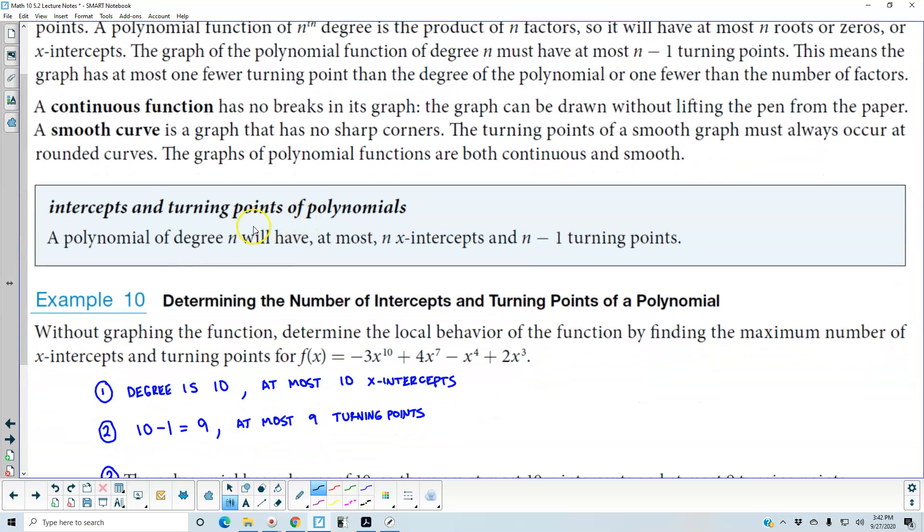Intercepts and turning points of polynomials. A polynomial of degree n will have at most n x-intercepts and n minus 1 turning points.